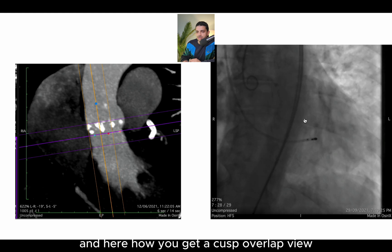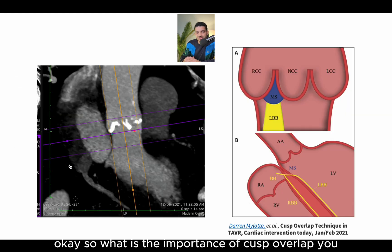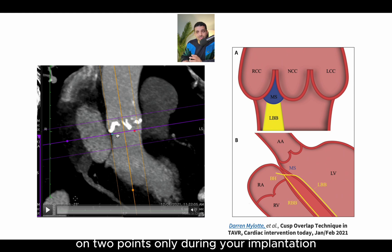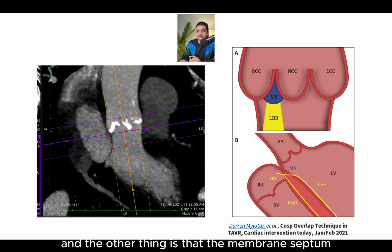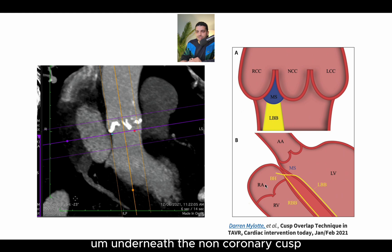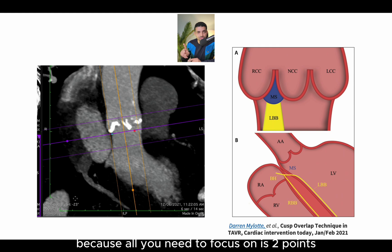Here is the demonstration of a cusp overlap view — this is the co-planner view and here is how you get the cusp overlap view. Basically, you need to focus on two points only during your implantation: the non-coronary cusp, which is the lowest, and you are sure the other point on the same line corresponds to two cusps already at the same level. The membrane septum and the left bundle branch lie underneath the non-coronary cusp. So if you want to adjust by a millimeter up or down, it's easy because all you need to focus on is two points — the edge of the valve and the nadir of the non-coronary cusp.